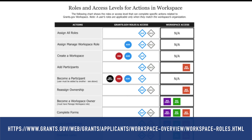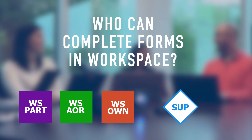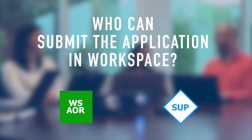On Grants.gov, at this URL, we have created a chart that maps every key workspace action to the required roles or access levels. For example, when completing forms, all three participant types can contribute, as well as superusers outside the workspace. But when submitting, a participant must have the AOR role or a superuser from outside the workspace must click Submit.